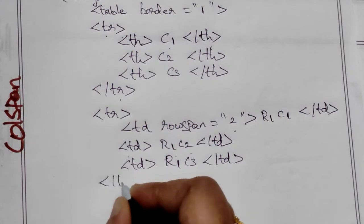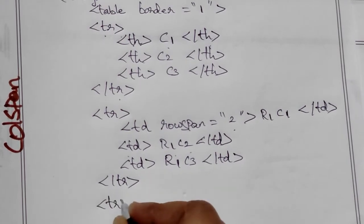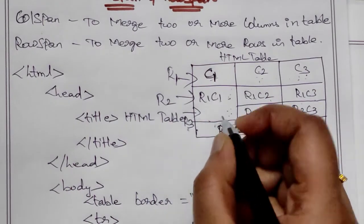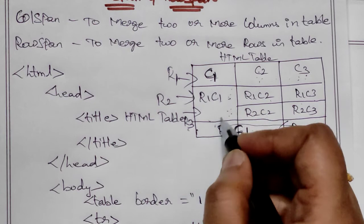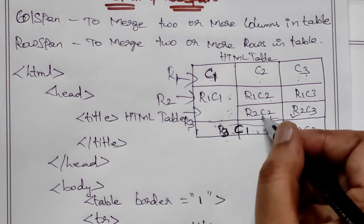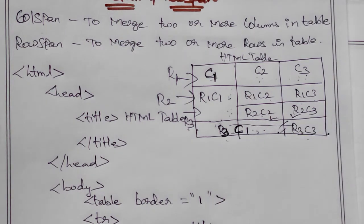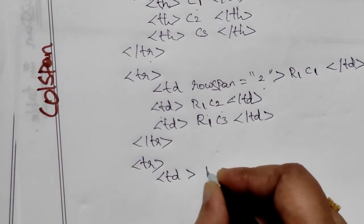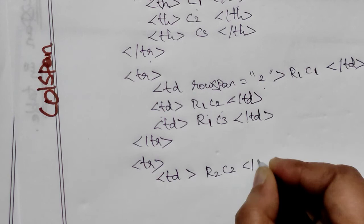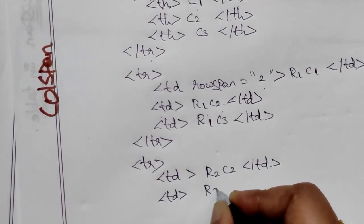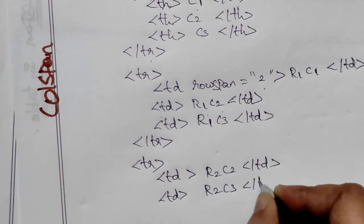Second row, next. Third row open. Already the first column of the second row is merged. Now R2C2 and R2C3. So the second row's first column is already merged. R2C2 — second row — R2C3, merge.